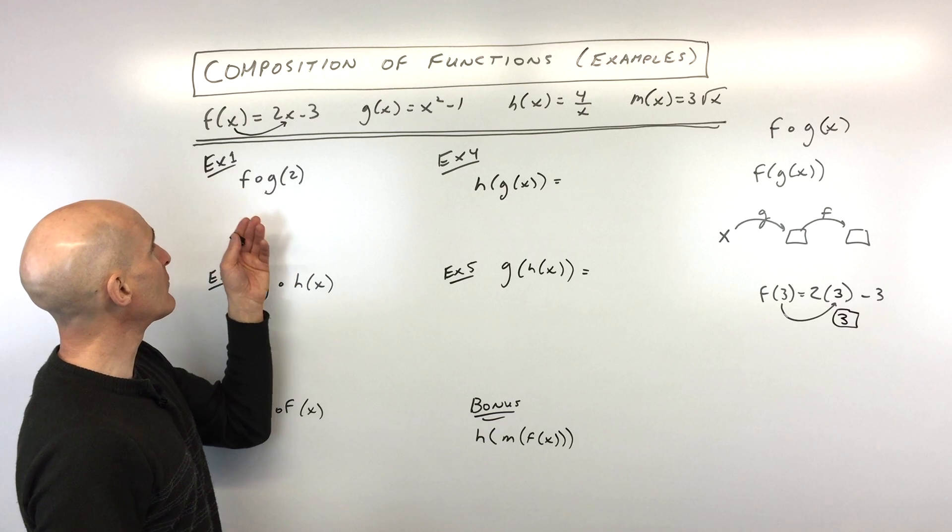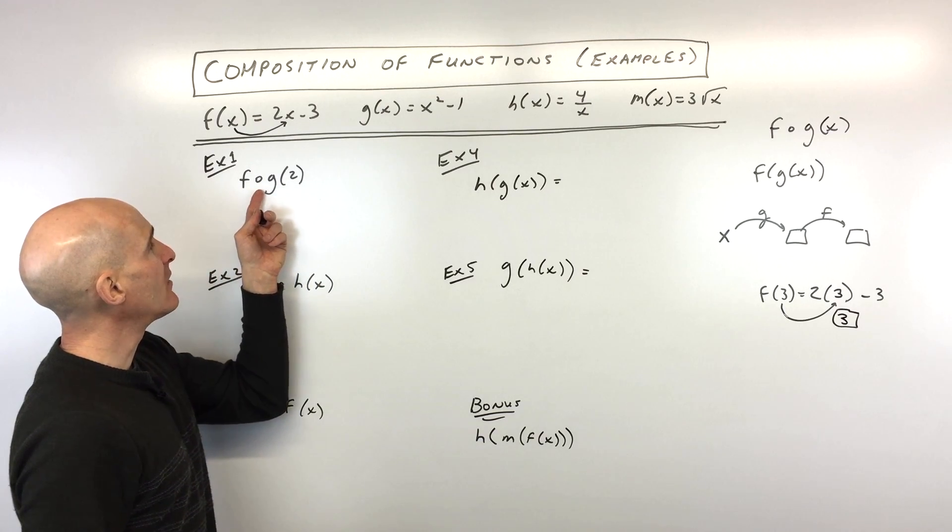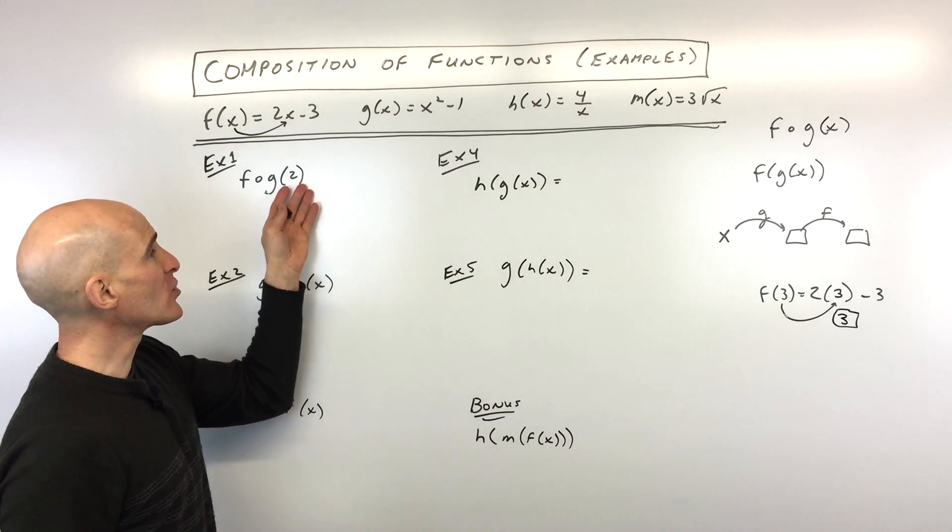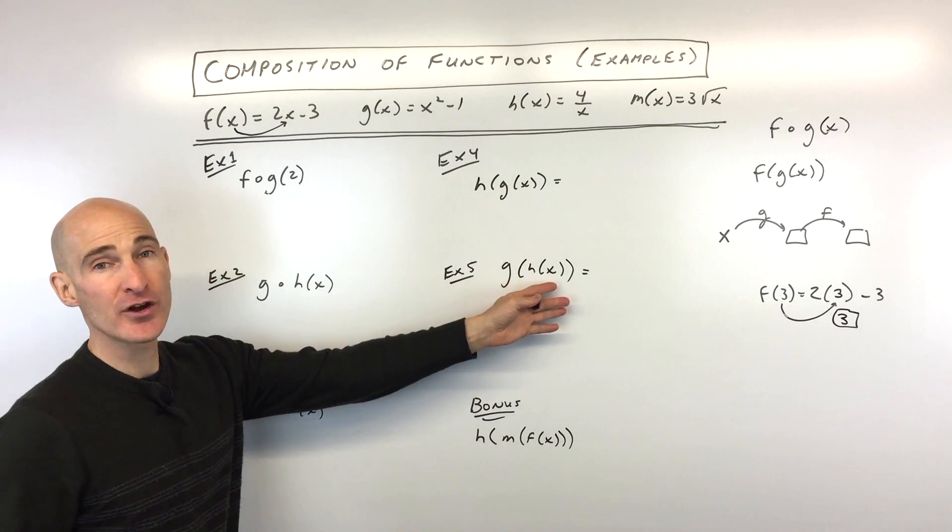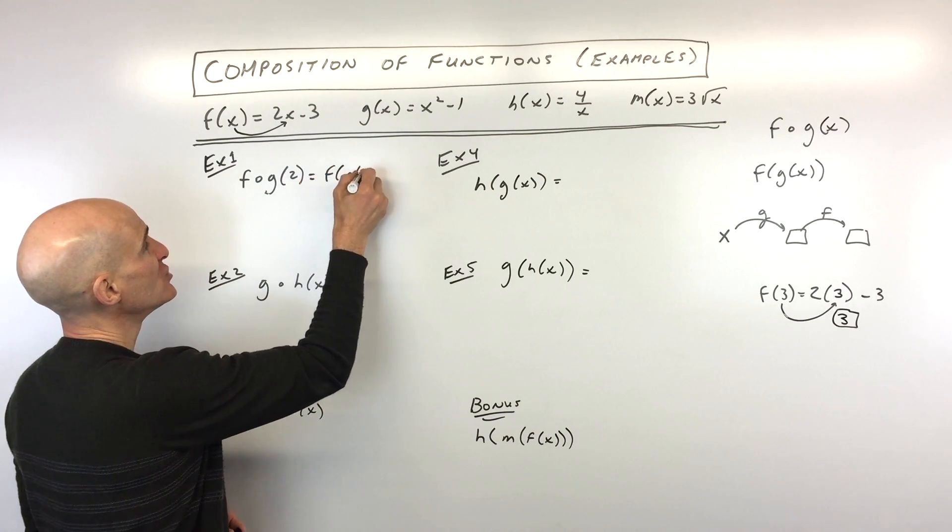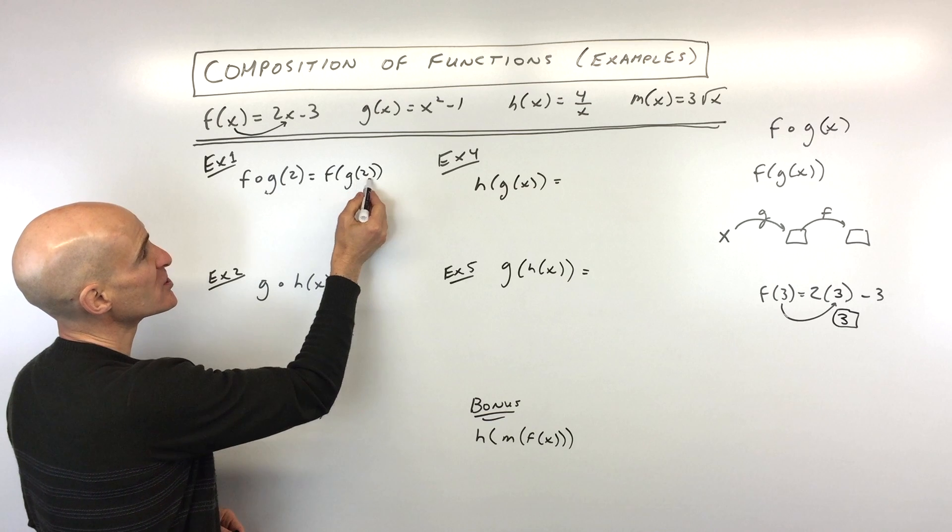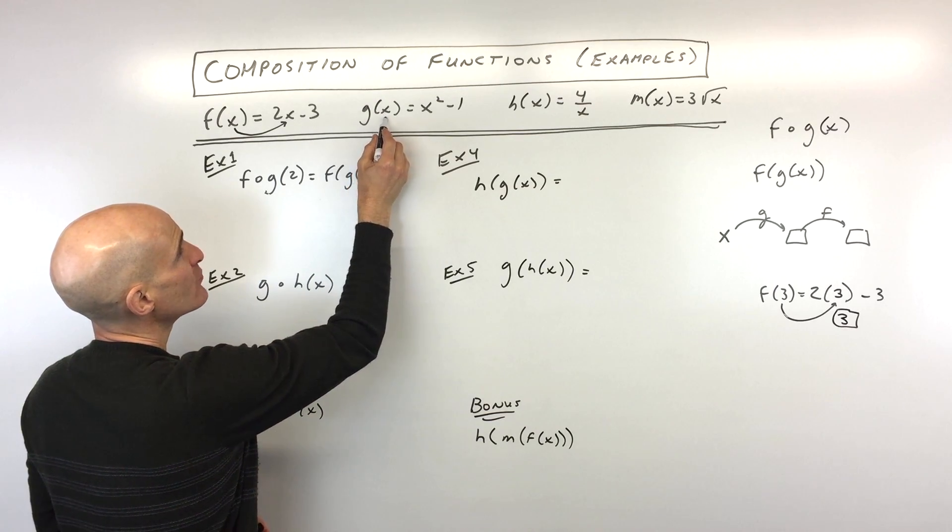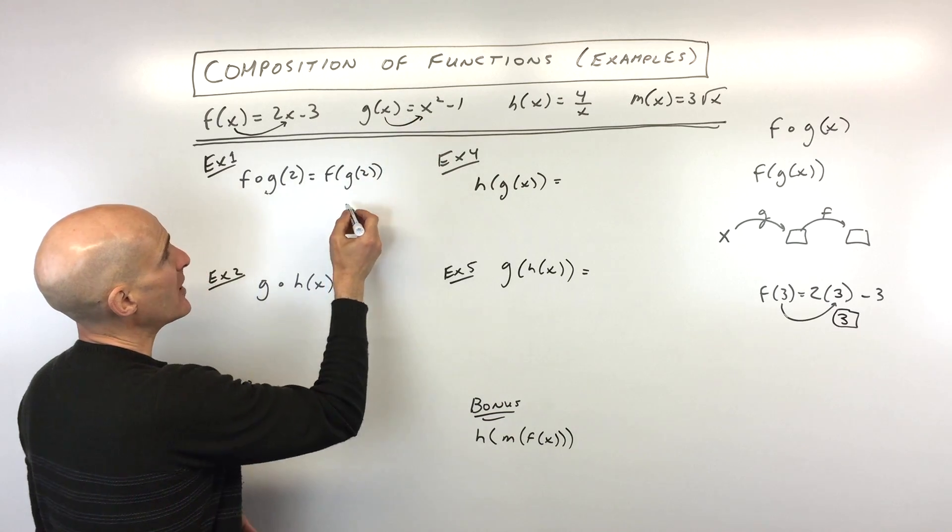For example number one, we've got f of g of 2. So what we do with this one, this is a numerical example. Some of these other ones just involve variables, but we're going to rewrite this as f of g of 2. We're going to start on the inside, go to our g function, and remember whatever is in the parentheses, that goes in for x on the right.